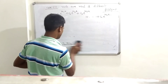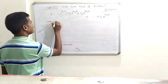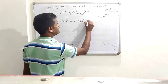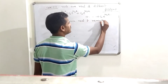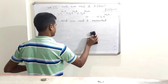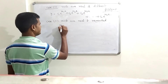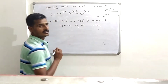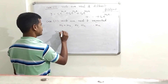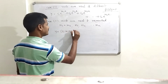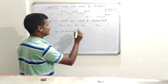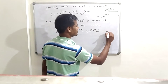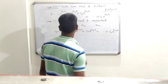Case 2: Roots are real and repeated. Let us say the first two roots are repeated, so m₁ = m₂, and all remaining roots are distinct. In this case the solution is: y = (c₁x + c₂)·e^(m₁x) + c₃·e^(m₃x) + ... + cₙ·e^(mₙx).